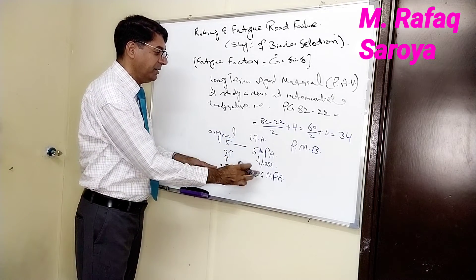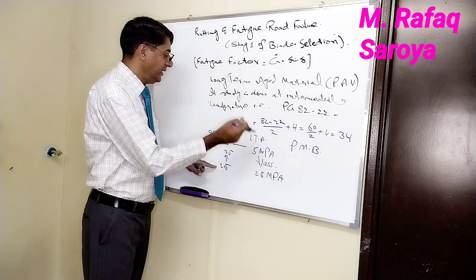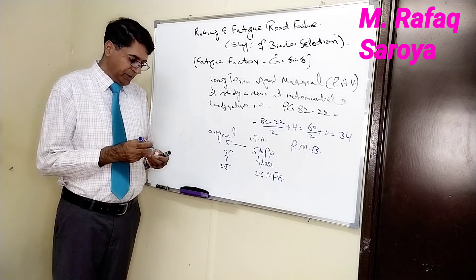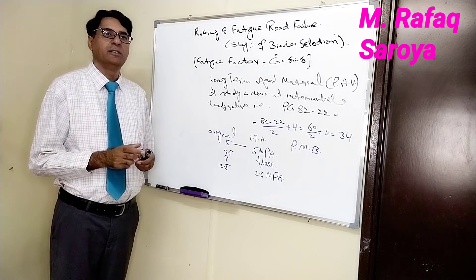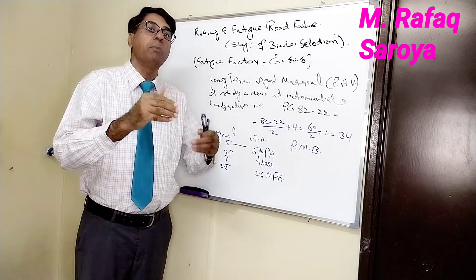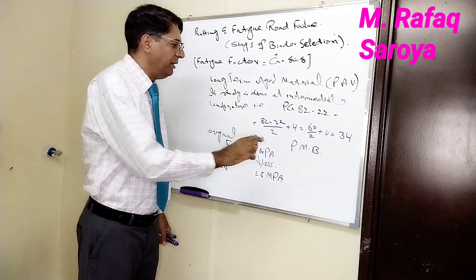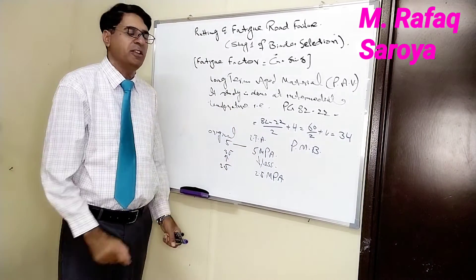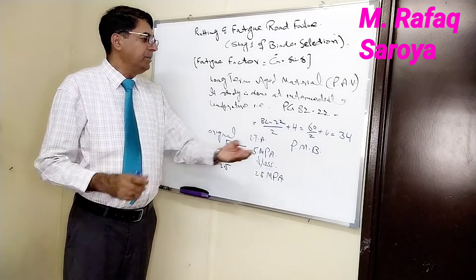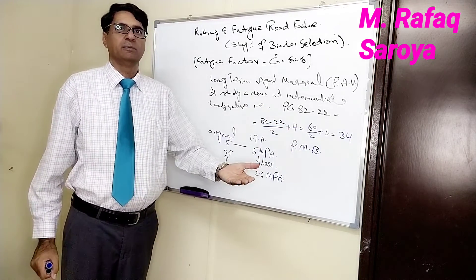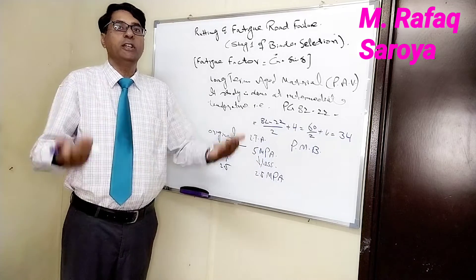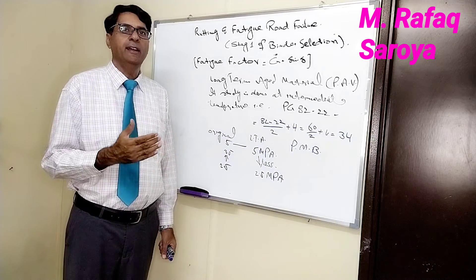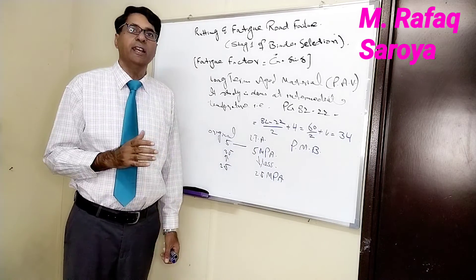After long-term ageing, the material is going to show more elastic characteristics compared to the original binder. The polymer modified binder will also show some good characteristics. Although its value range is not explicitly mentioned in the specification — only the 5 MPa limit is specified — keep in mind that the polymer modified binder is the best. It will show good resistance against both fatigue cracking and rutting.